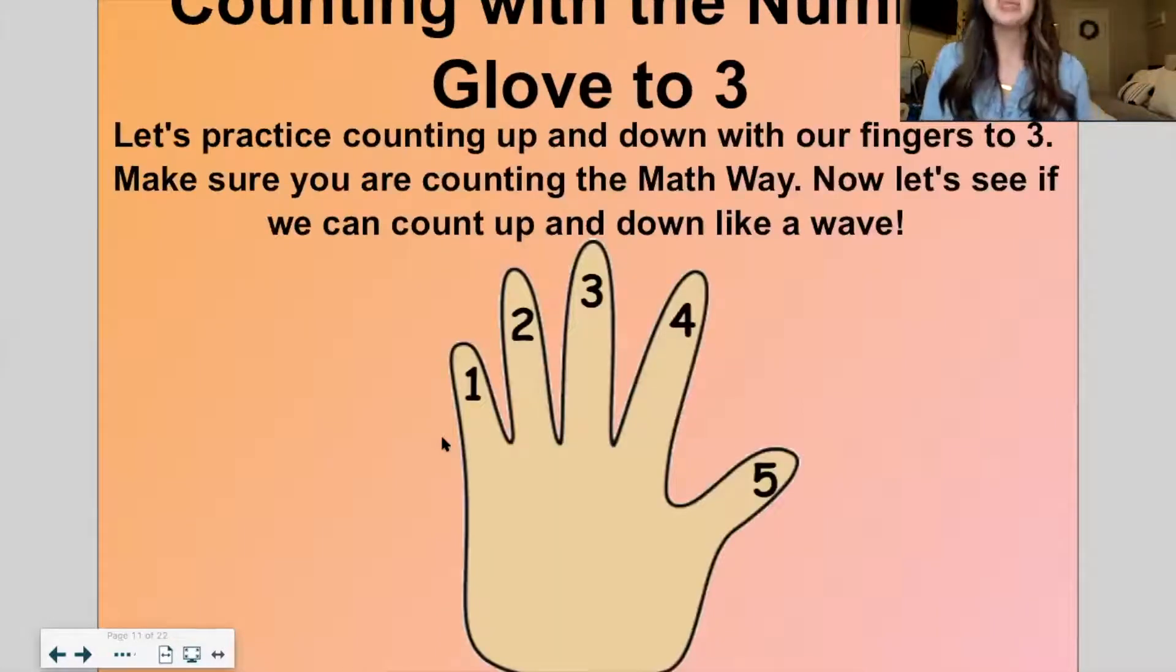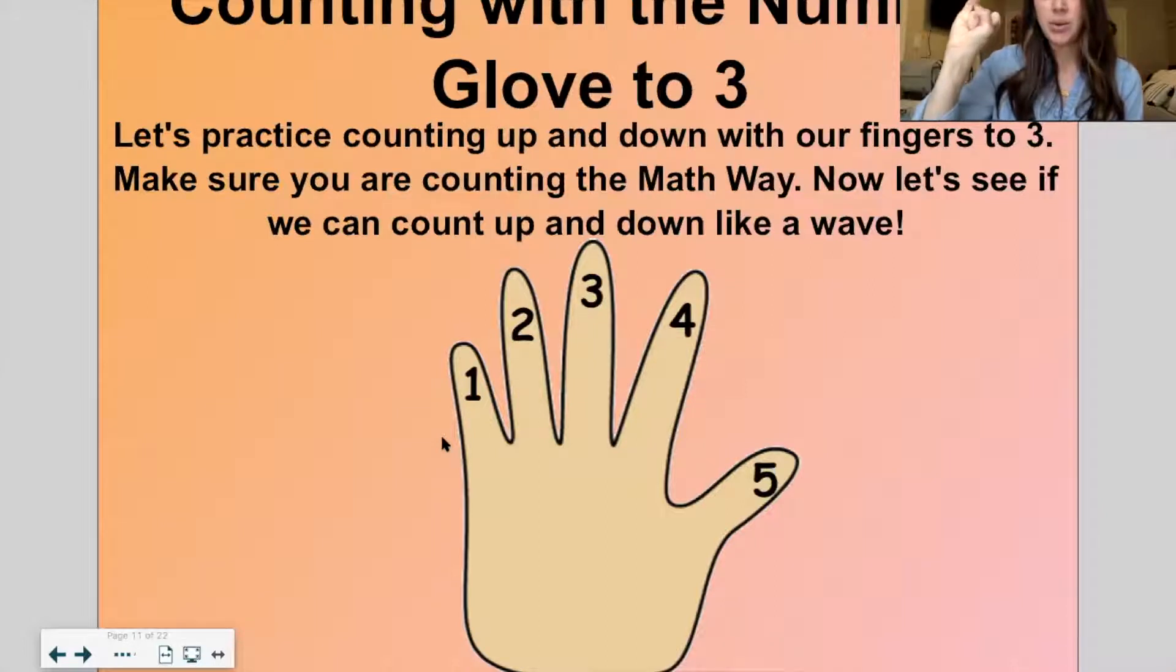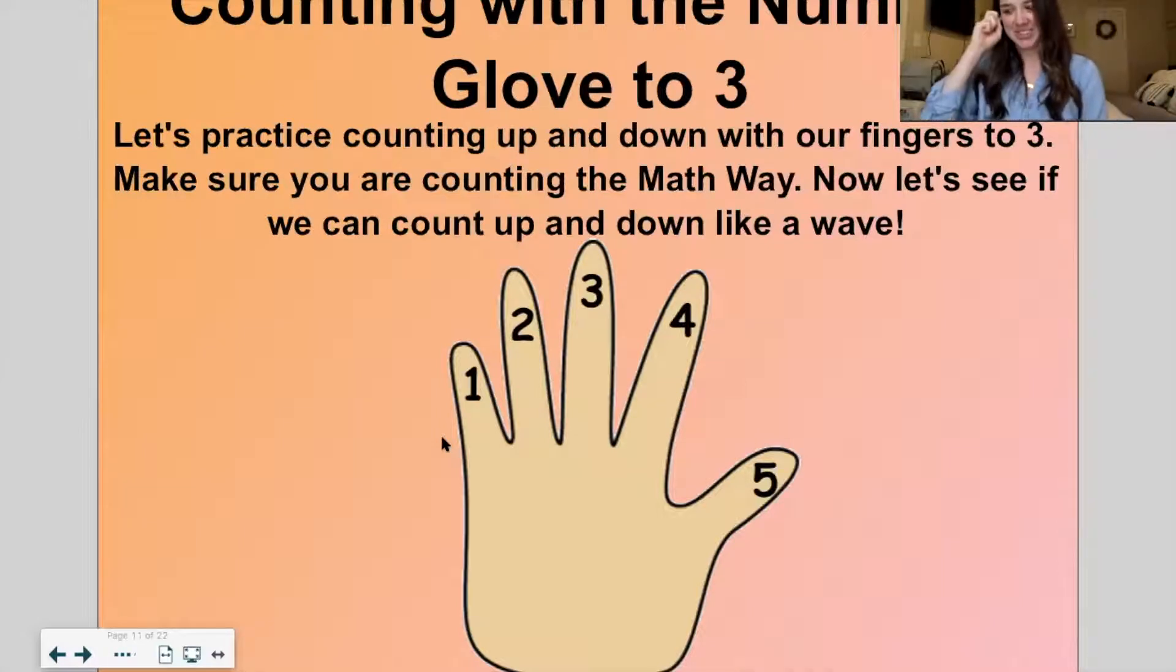Okay. Now for this part, I want you to start with a closed fist. I'm going to use this closed fist. And we're going to practice counting up to three and then down, up and down. You ready? Closed fist. One, two, three. Good. Now let's count down. Three, two, one. Let's do it again. One, two, three. Three, two, one. Nice work.